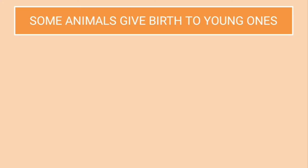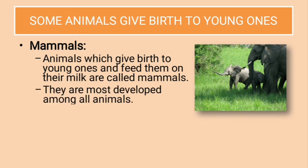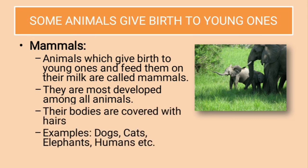Some animals give birth to young ones — these animals are called mammals. Animals which give birth to young ones and feed them on their milk are called mammals. They are the most developed among all animals. Their bodies are covered with hairs in most cases. Examples include dogs, cats, elephants — this picture shows the young ones of elephants — and humans.